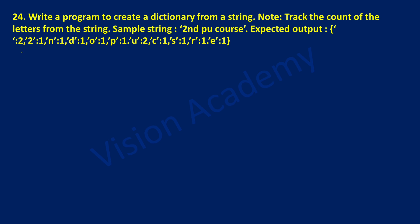Let us begin with writing a string. s is equal to — here they have already given 'second PU course'. In a double or single quotation mark, you can write 'second PU course' and end the quotation mark to form a string constant. Now let us print the same string using a print statement: in a double quotation mark write 'the input string is', then put a comma and write s.